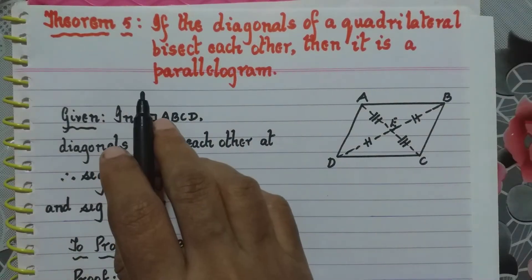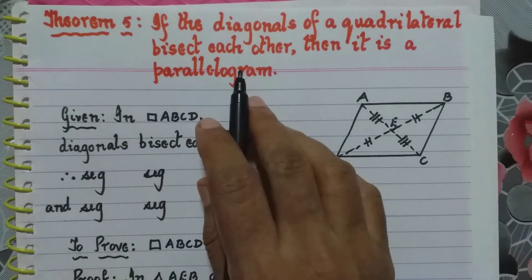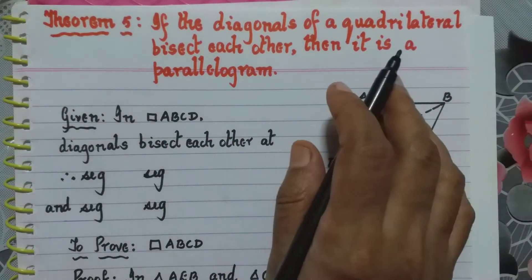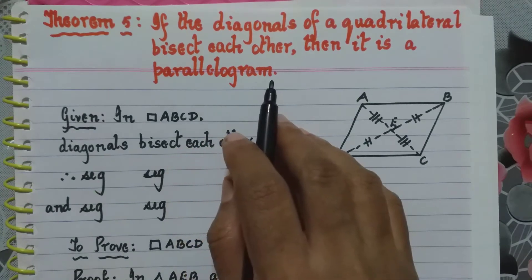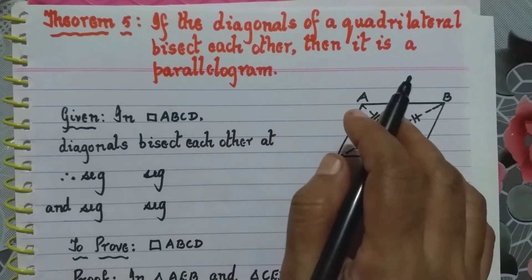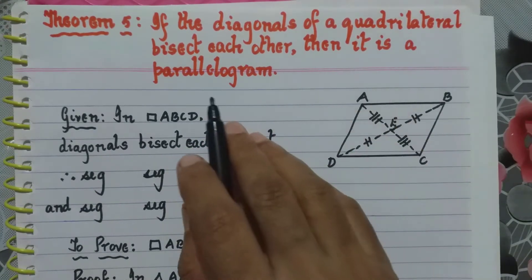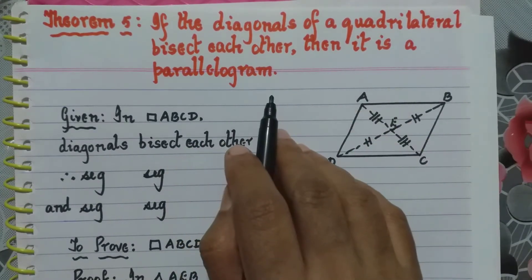We go to the fifth theorem. If the diagonals of a quadrilateral bisect each other, then it is a parallelogram.